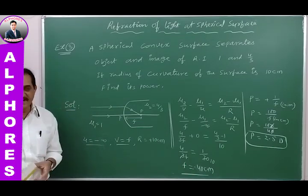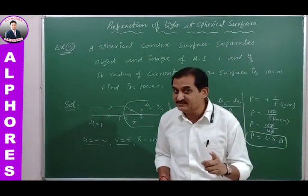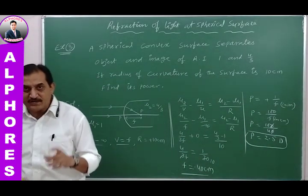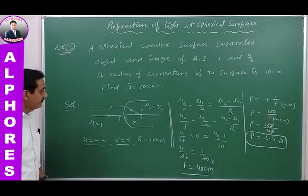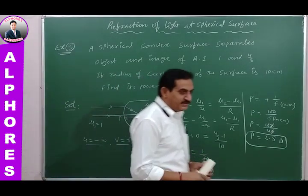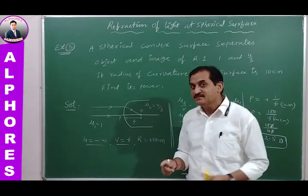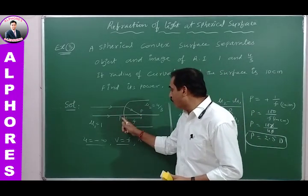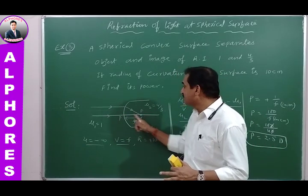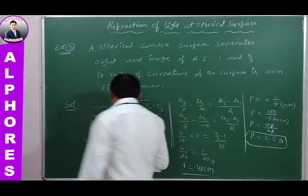To find the power of a spherical refractive surface, spherical mirror, or lens, we need to find the focal length first. Once we know the focal length, we can estimate the power. Therefore, we should focus on finding the focal length of this spherical refractive surface. A parallel beam of light incident on the surface converges after refraction, and that point is the principal focus, giving the image distance — which is the focal length.